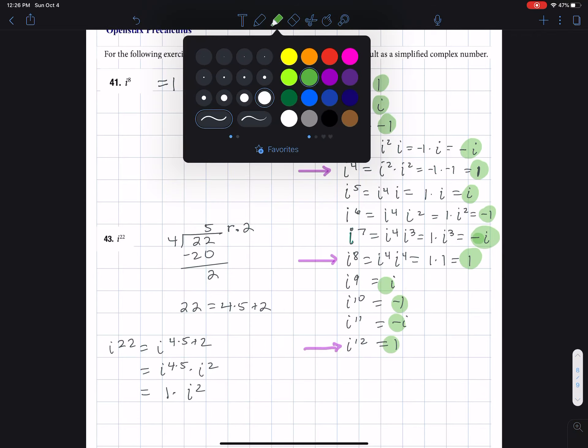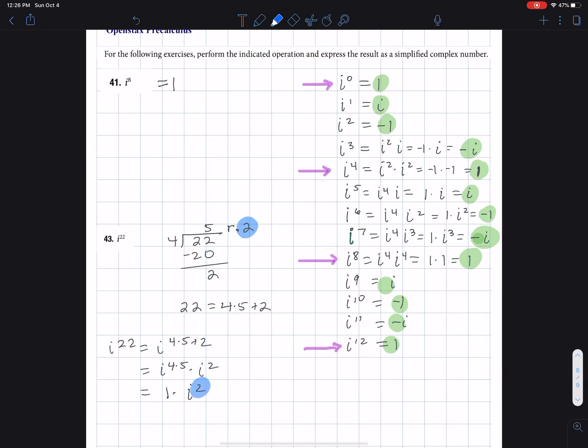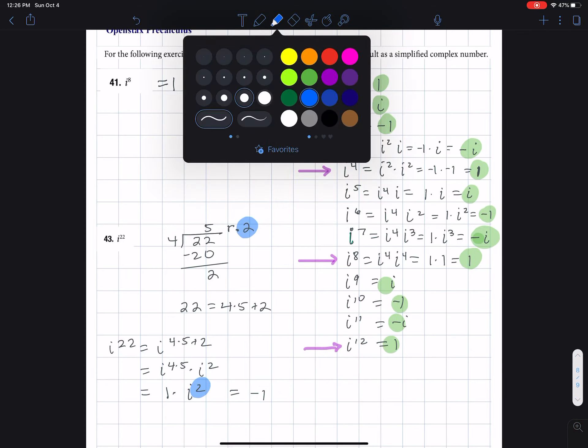Those match up. That's what I'm really looking at. I have the remainder two here and the remainder two here. I didn't have to really show all the stuff in between, but I see i squared is negative one. And that's our answer at the end.